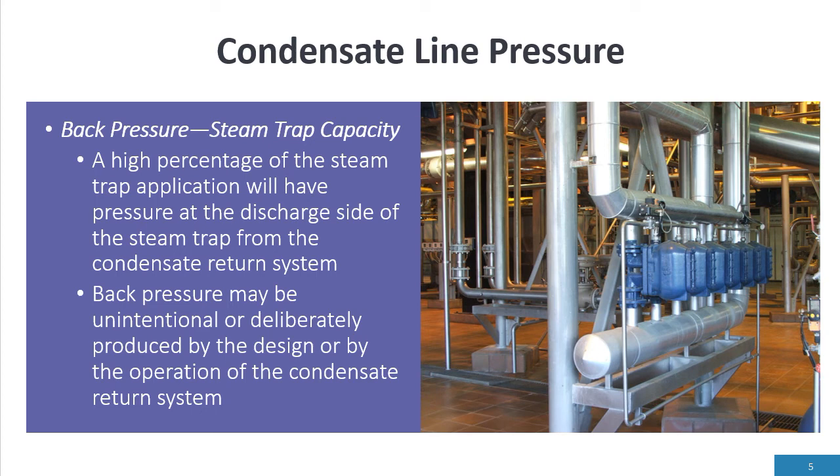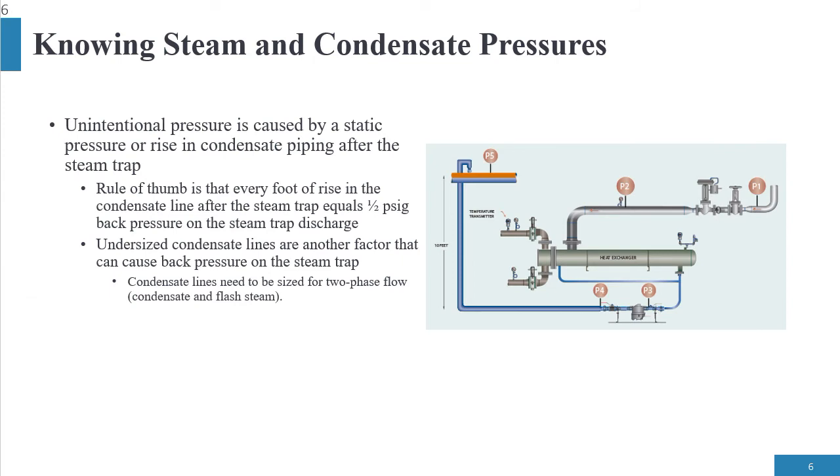Probably 95% of the condensate systems have back pressure. Back pressure became unintentional or deliberately produced by the design of the system. Today we are looking at implementing pressurized return systems to increase the steam thermal cycle efficiency, which means there is going to be intentional back pressure onto the system.